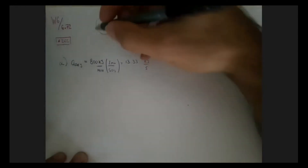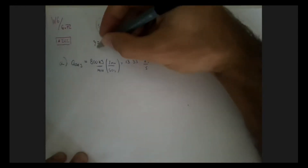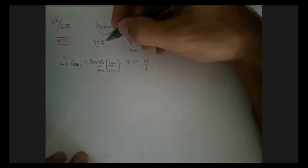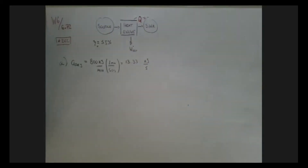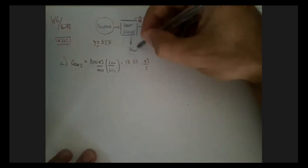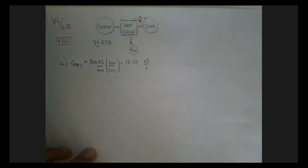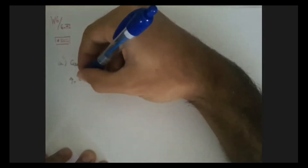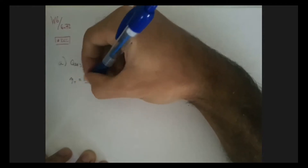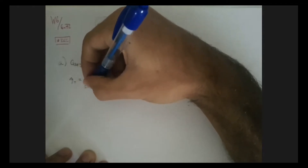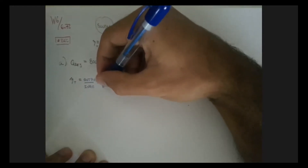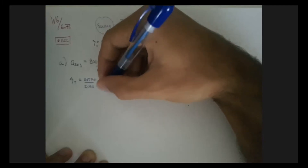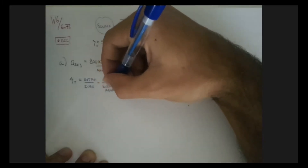We have the thermal efficiency of this engine, which is 55%. We can use that to calculate the actual energy being outputted. We can think of efficiency as the output over the input — how much did we get out of how much was available, i.e., the energy available.